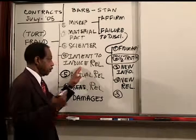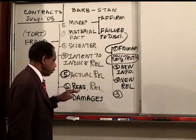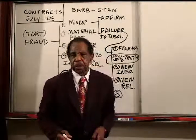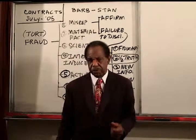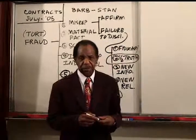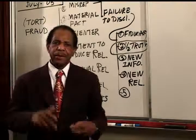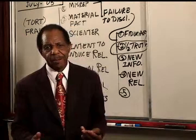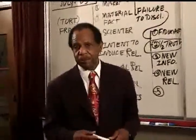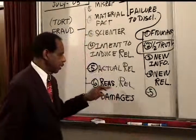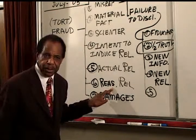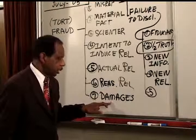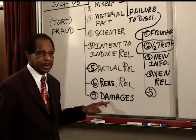Intent to induce reliance and actual reliance are straightforward. Reasonableness of the reliance means people can't act a fool and rely on things no reasonable person would rely on — for example, relying on the claim that a 1934 car goes 150 miles an hour is probably not reasonable. It's sometimes called justifiable reliance. And you've got to be damaged in some way — it doesn't have to be money damages, but you must be damaged. This is what constitutes fraud.